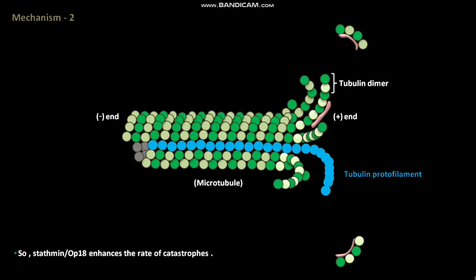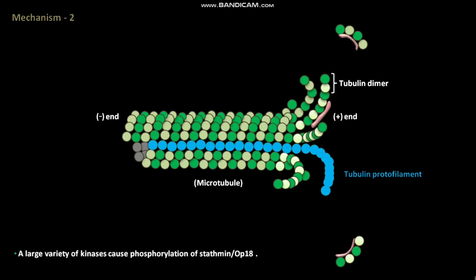So stathmin or OP18 enhances the rate of catastrophes. A large variety of kinases causes phosphorylation of stathmin or OP18, and this phosphorylation inhibits the activity of stathmin or OP18.